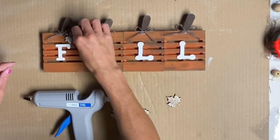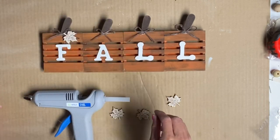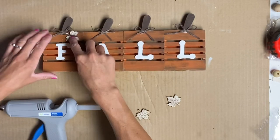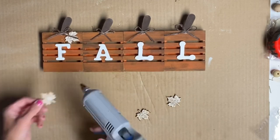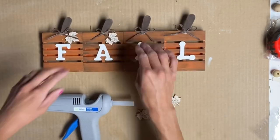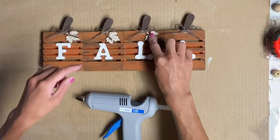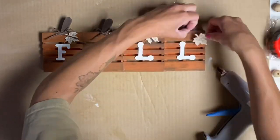Once that was dry, I had these wooden leaves that I got in a pack from Hobby Lobby. They came with some leaves and pumpkins, and I decided to hot glue a leaf at the end of each popsicle stick as well.